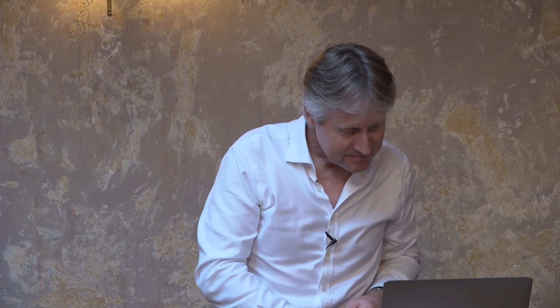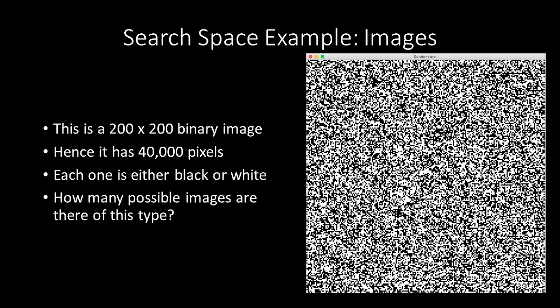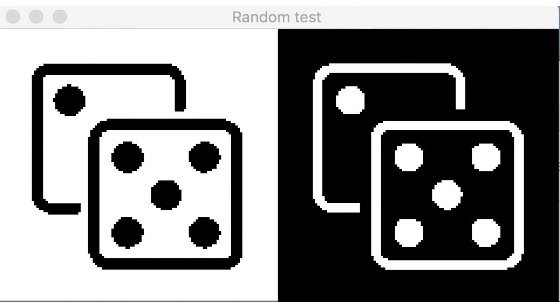I want to say a little bit about searching spaces. In AI and game AI, people talk a lot about the size of a search space — I just want to show that it's not that important. Here's a 200 by 200 binary image with 40,000 pixels, giving two to the 40,000 possible images — a really, really very large number. We can take a binary image of a couple of dice and create chaos from order by adding random noise: for a while you can make out the picture, but after a while it just disappears.